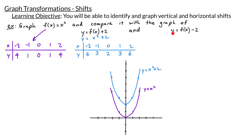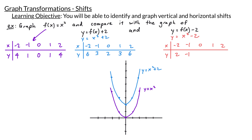Now let's graph y = f(x) - 2, which is y = x² - 2. Again we make a table of values for x from -2 to 2. Plugging in x = -2 gives (-2)² - 2 = 4 - 2 = 2; x = -1 gives 1 - 2 = -1; x = 0 gives -2; x = 1 gives 1 - 2 = -1; and x = 2 gives 4 - 2 = 2.